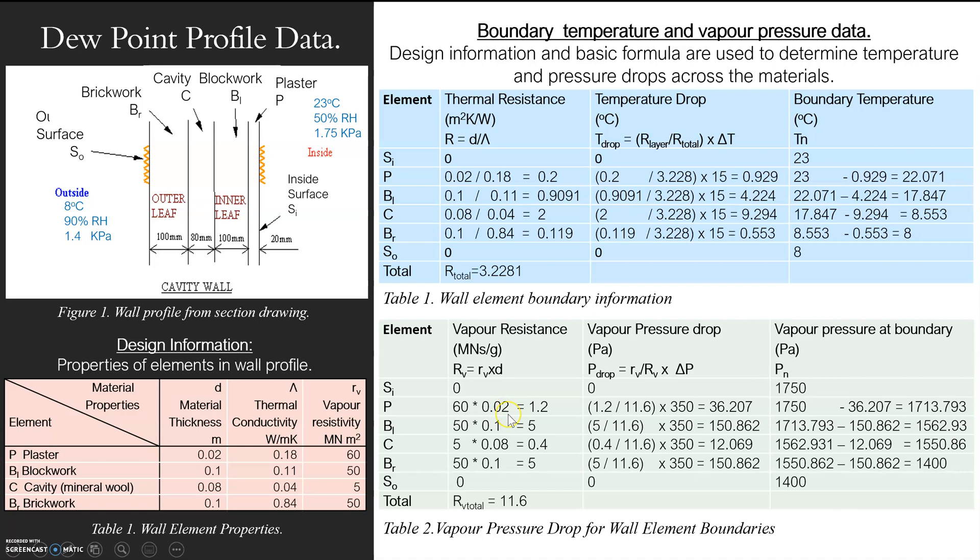So 60 times 0.02 gives me 1.2 for plaster, block work, cavity, brick work. So because I've got the resistivity, I can just work that out quite easily. And then I've got my total resistance throughout the whole material.